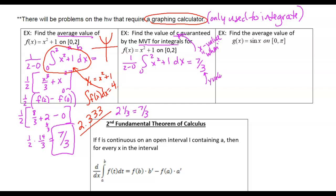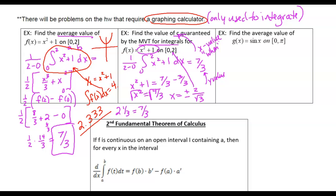You get one point for the setup, one point for the average value answer, and then one point for actually answering the question. The y value of the function is x squared plus 1. So we set x squared plus 1 equal to the height 7/3 and solve. Subtract 1 — which is 3/3 — leaving x squared equals 4/3, then take the square root. You get plus or minus 2 over root 3. Since we only care about the answer from zero to two, we want c equals 2 over root 3. No need to rationalize in calculus — the AP does not care.